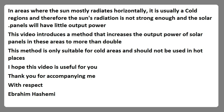In areas where the sun mostly radiates horizontally, it is usually cold and the sun's radiation is not strong enough, so solar panels will have little output power. This video introduces a method that increases the output power of solar panels in these areas to more than double. This method is only suitable for cold areas and should not be used in hot places.